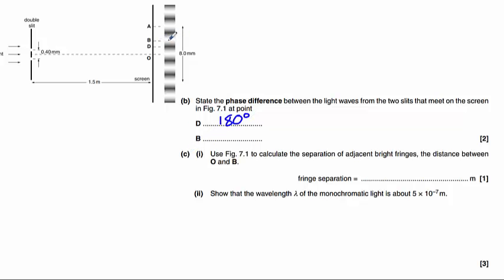At point B we have a bright fringe which must mean that the phase difference is 0 degrees. They are in phase.